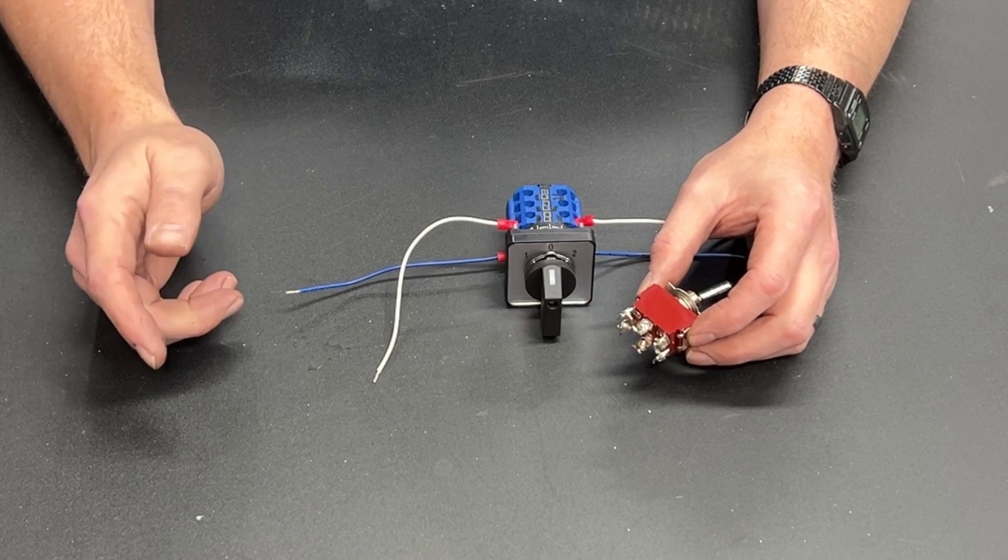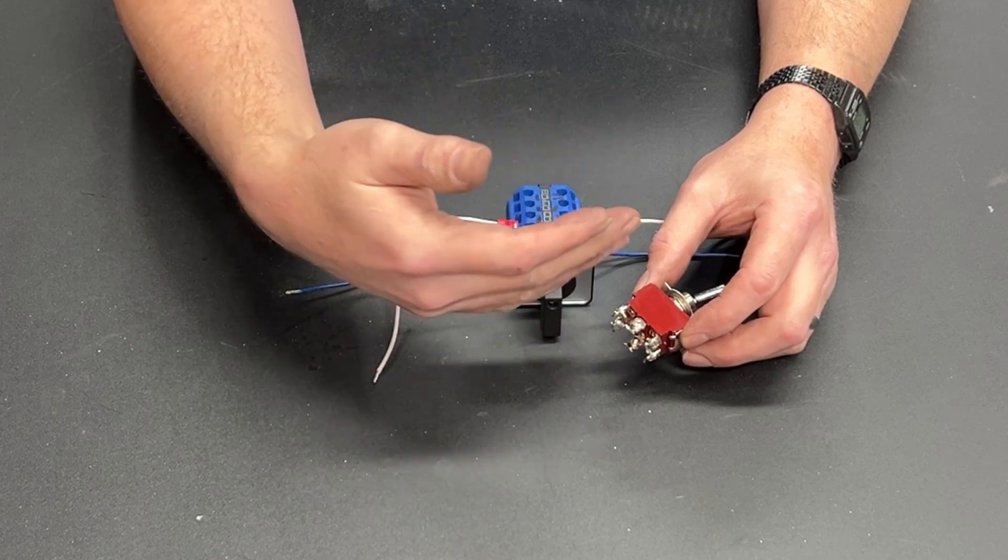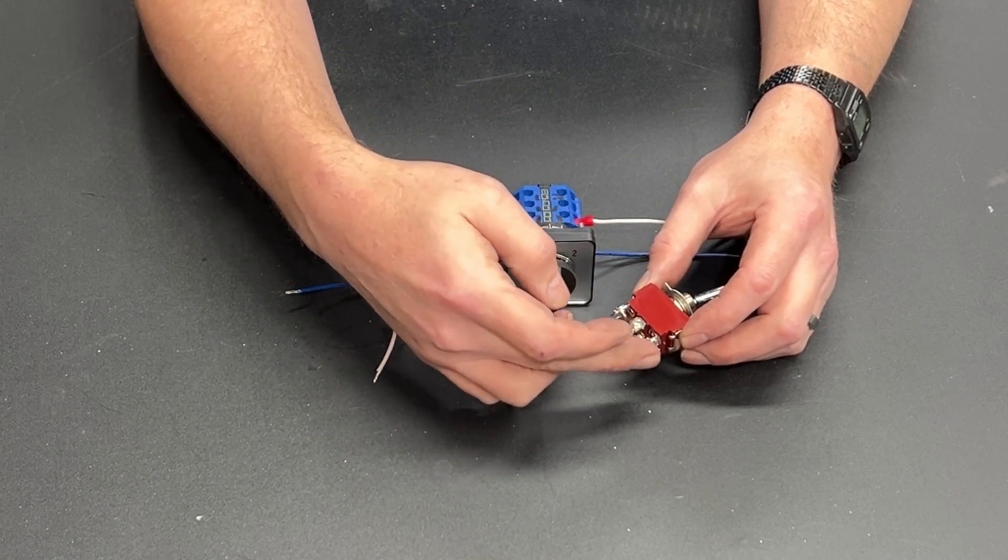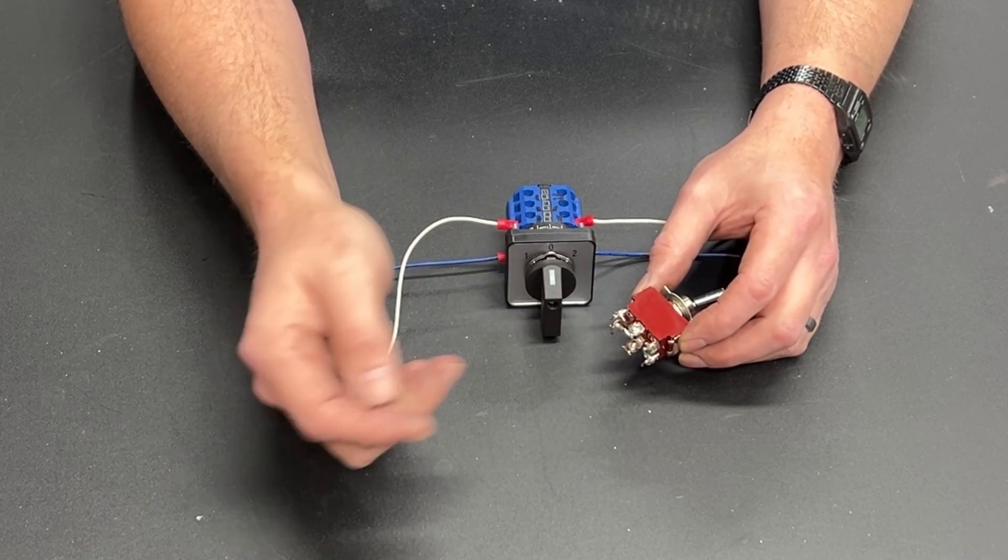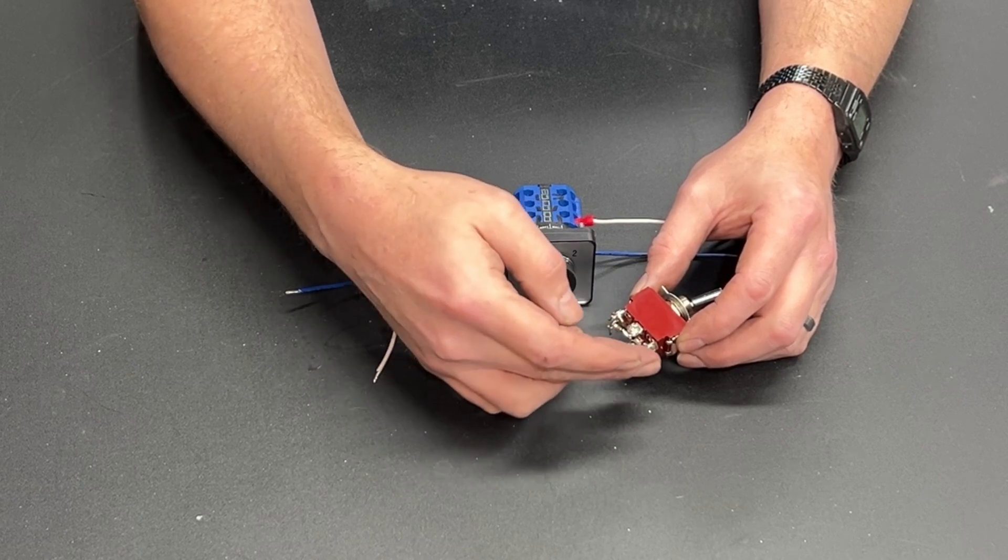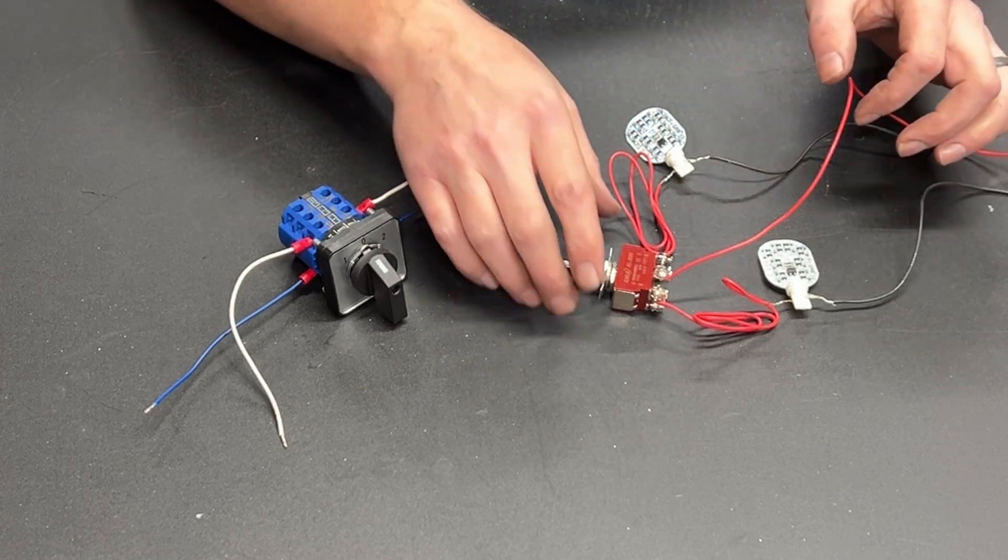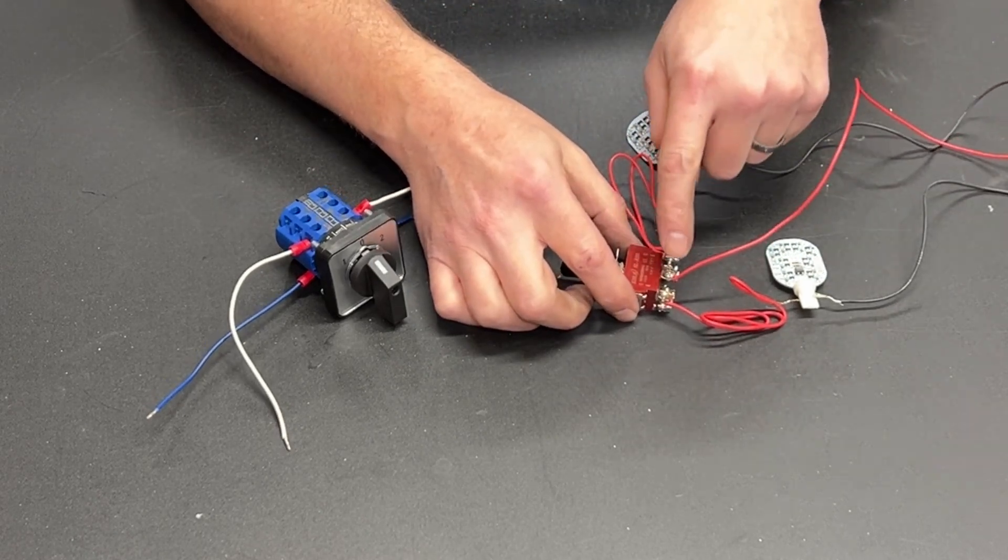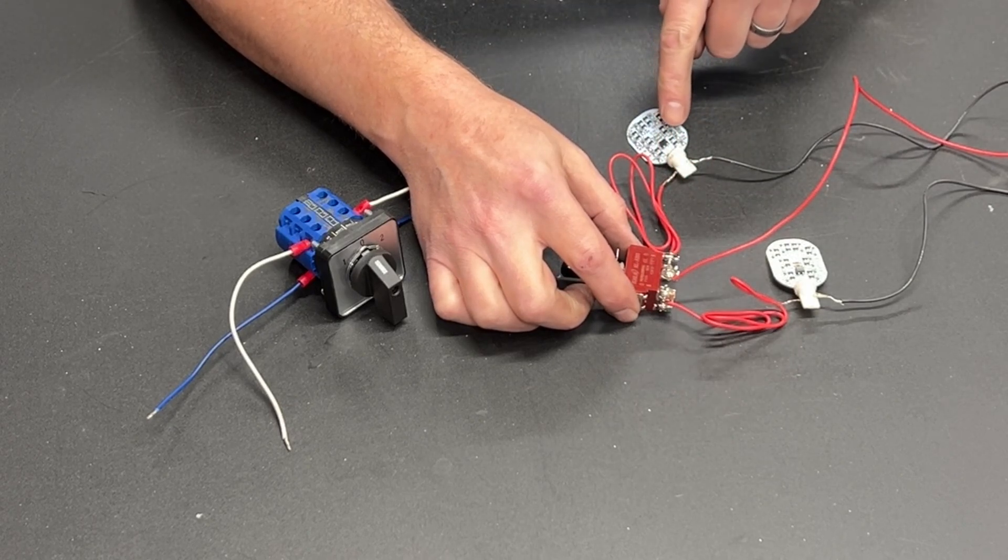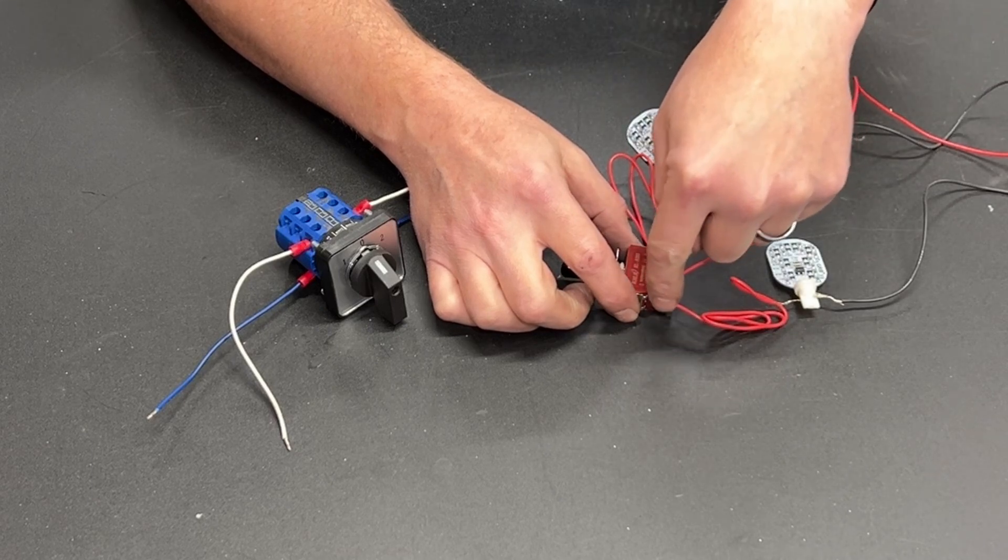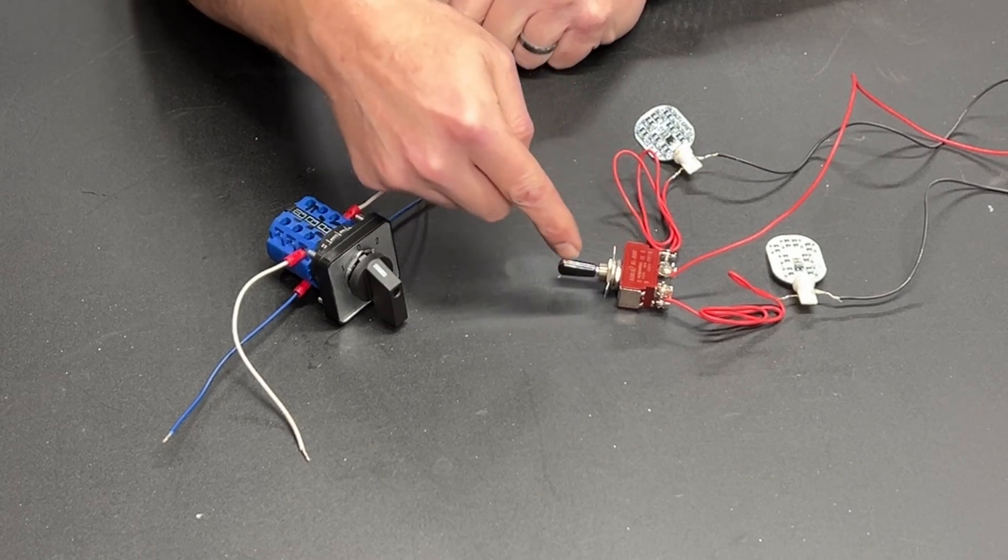A double throw switch means that power or a signal either comes in on these outside ones and goes out in the middle, or it comes in on the middle and goes out to this one or this one. To illustrate I've wired this up with a couple of LED light bulbs. So we have power coming in on this middle terminal and then it goes out on the side terminals to each light bulb. And typically with one that is center off like this one it's opposite.